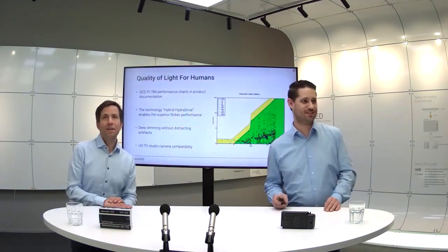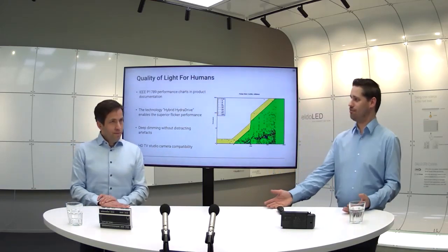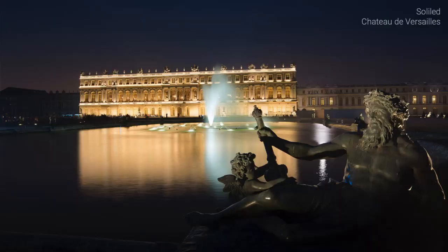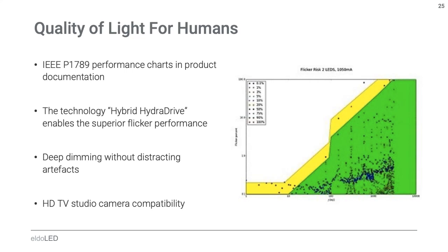Looking at another project — here a Pharos system is installed by one of our partners, and it's actually being used to train students to learn how to use control systems. This is a nice example for us to look into quality of light for humans. Quality from a technical perspective is achieved by using the right brands, but what about the human perspective? For humans, it's very important to have stable light output.